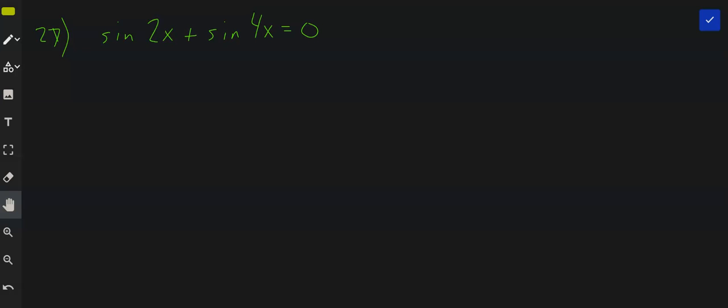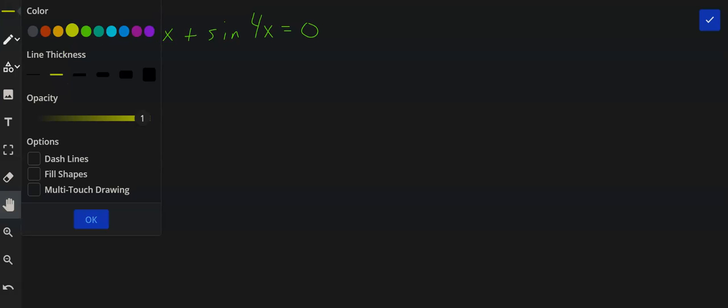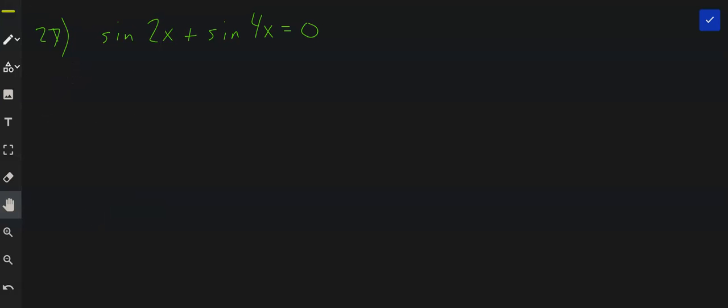So we're actually going to look at this sin 4x like this: 2 times 2x. We're going to treat it as a double angle, but it's going to be twice a double angle, if that makes sense.